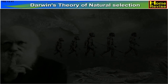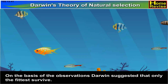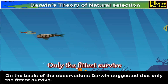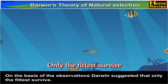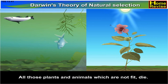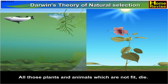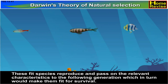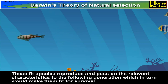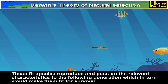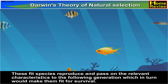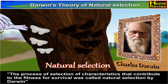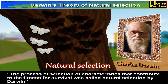Darwin's Theory of Natural Selection. On the basis of his observations, Darwin suggested that only the fittest survive. All those plants and animals which are not fit die. The fit species reproduce and pass on the relevant characteristics to the following generation, which in turn makes them fit for survival. The process of selecting characteristics that contribute to fitness for survival was called Natural Selection by Darwin.